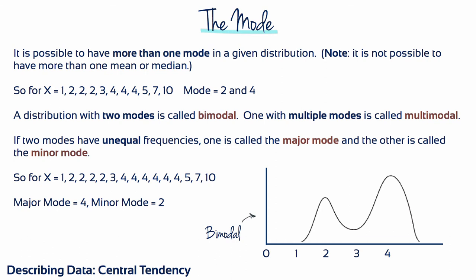A bimodal distribution is often an indication that two separate and distinct groups of individuals exist within the same population or sample. For example, if you measured shoe size for each person in a set of 100 college students, the resulting distribution would probably have two modes. One corresponding primarily to the males in the group, and one corresponding primarily to the females.